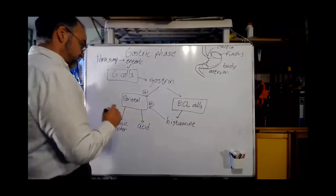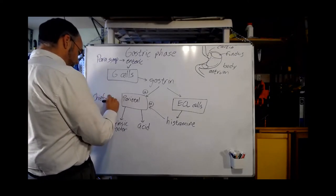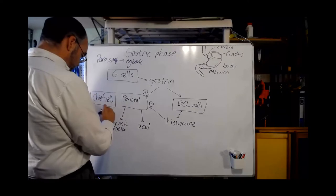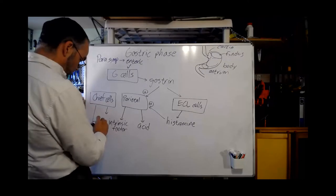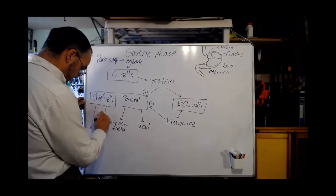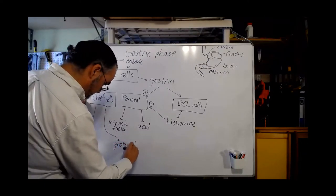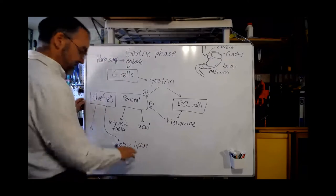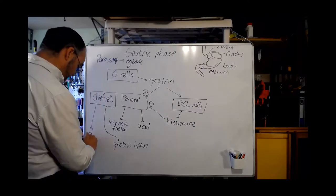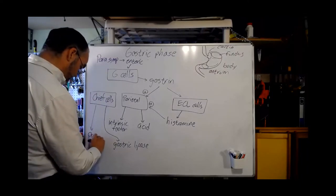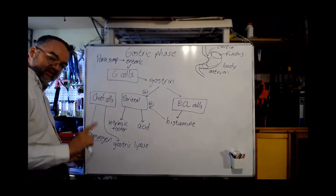The chief cells produce two enzymes. One of the enzymes they produce is gastric lipase, a fat-digesting enzyme. The other is something called pepsinogen. Keep that one in mind, we're going to come back to that.